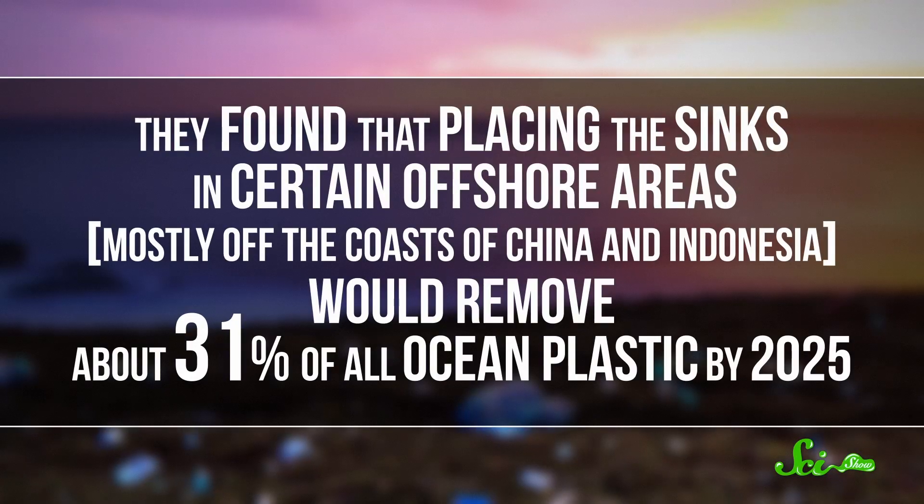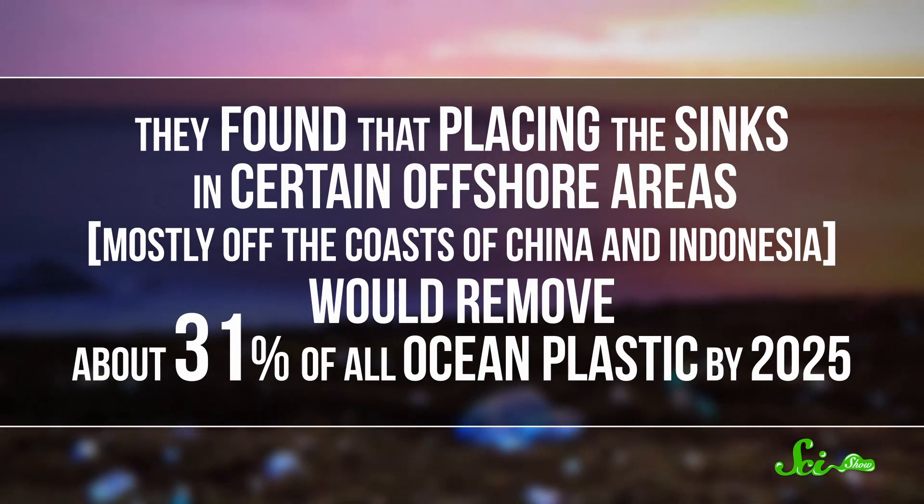When they ran the simulations with the sinks in different test locations, they found that placing the sinks in certain offshore areas, mostly off the coasts of China and Indonesia, would remove about 31% of all ocean plastic by 2025. The sinks would catch plastics as they entered the ocean, as well as debris swept along by currents. Meanwhile, models of sinks deployed around the Pacific Garbage Patch only cut trash by about 17%.